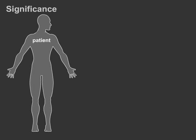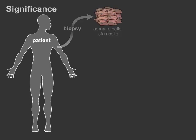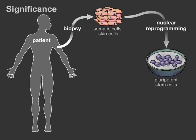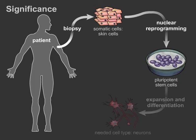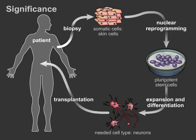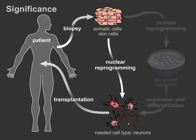Nuclear reprogramming has received significant research attention because of its therapeutic potential. Somatic cells from a patient can be reprogrammed into immune-compatible cells that behave like pluripotent stem cells. These cells can be expanded and induced to differentiate into a needed cell type in vitro, providing patient-specific cells for replacement of diseased or damaged tissues. A needed cell type may also be directly generated from patient cells without the need for intermediate pluripotent cells.